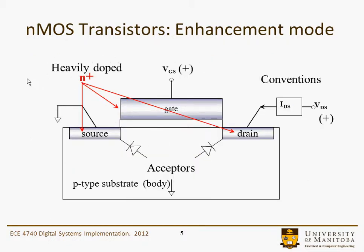Here's a schematic cross-section of a planar type of MOS device. Here you have the source, the gate, and the drain. This is the substrate where the transistor is sitting, and these are the conventions used if you were to measure this type of device. VGS would be positive and VDS would be positive.